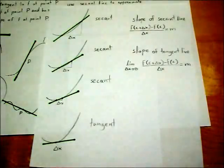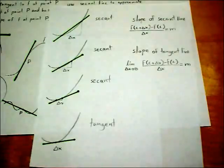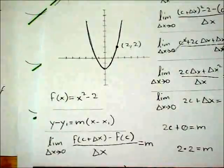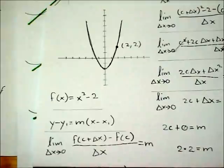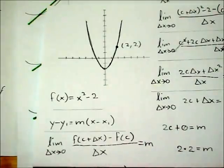Now we can find m and use the point-slope formula from before. Let's try an example. We have the function f of x, which equals x squared minus 2. We're going to find the tangent line to this function at point 2, 2. We have the point-slope formula, but although we have a point, we still need the slope.